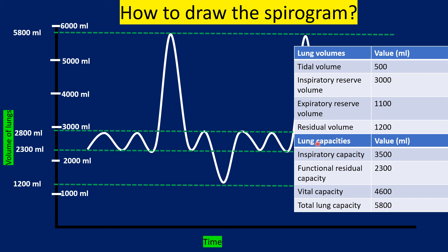From the same diagram we can also calculate the lung capacities. After learning the lung volumes, the capacities come as: inspiratory capacity 3500 milliliters, functional residual capacity 2300 milliliters, vital capacity 4600 milliliters, and total lung capacity 5800 milliliters. We will deal with lung volumes and lung capacities in detail in our next video.